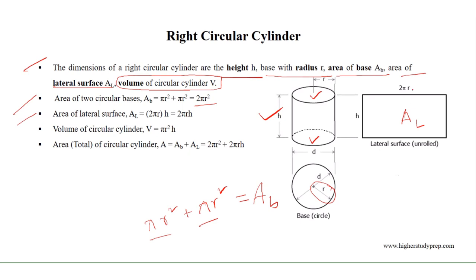The area of the lateral surface A_L is equal to 2 pi r times h, where h is the height of the circular cylinder — it is the width of the lateral surface and 2 pi r is its length. Therefore the area of the lateral surface equals 2 pi r h. The total surface area of a circular cylinder equals the area of the two circular bases plus the area of the lateral surface, which is 2 pi r squared plus 2 pi r h.